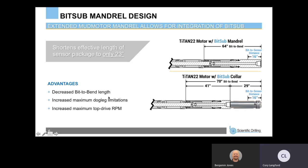With this new mandrel setup, we can increase the maximum dogleg limitations we can put the tool through, increase the maximum top-drive RPM, and it also decreases the bit-to-bend length. With a Titan 22 motor and bit sub collar below, we're looking at about a 70-inch bit-to-bend. With this new mandrel, we have a 64-inch bit-to-bend, which shortens the effective length of the bit sub collar to only 23 inches. Our bit-to-sensor distances remain the same at 16 inches, so we still get inclination and azimuthal gamma less than two feet from the bit in both setups.